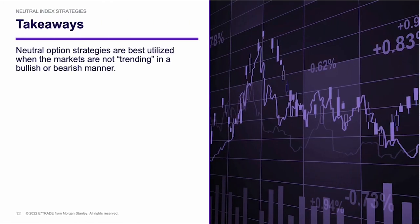Just a few takeaways as we wrap up. Neutral option strategies are best utilized when the markets are not trending, but the markets tend to trend, so you won't have a lot of opportunity to use an iron condor. A stock that's been stuck in a range for a long time will have very low volatility, and with low volatility there's not going to be a lot of premium to extract. It really becomes almost a fallback strategy when I can't find good bullish or bearish opportunities — but it's one I enjoy trading.